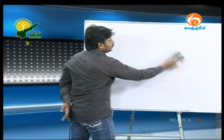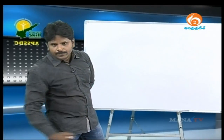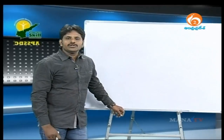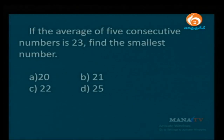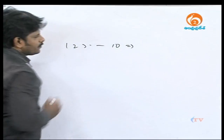The average of 5 consecutive numbers is 23 — find the smallest number. Also note: for numbers 1 to 10, average equals (1+10)/2 equals 5.5. The average lies between the minimum and maximum ends.